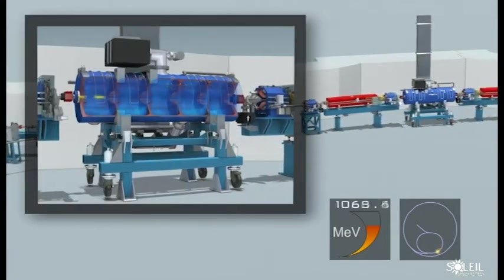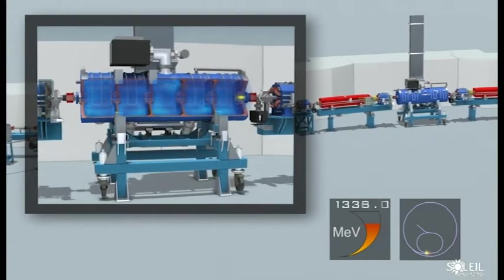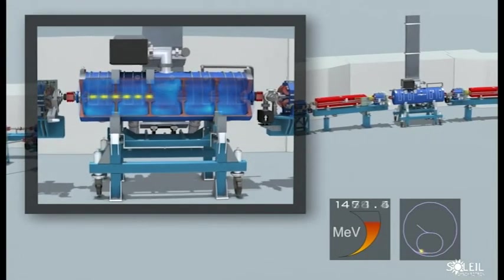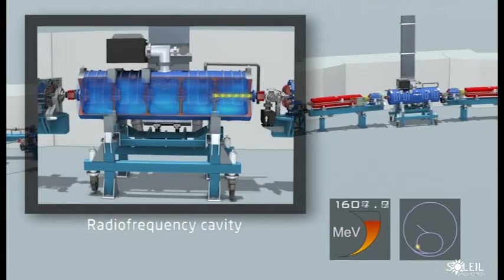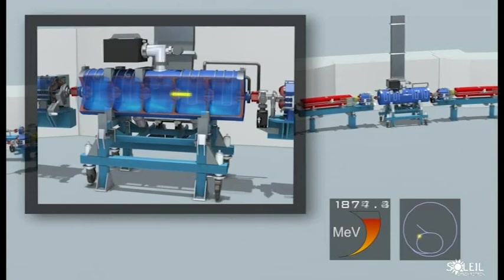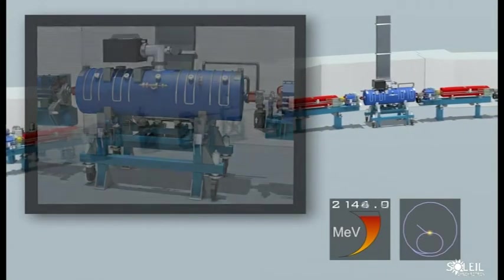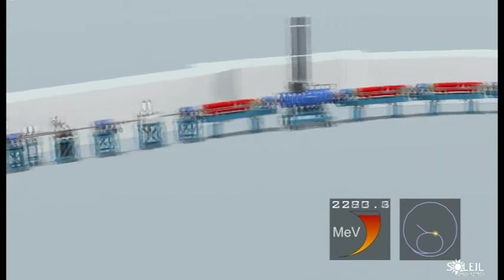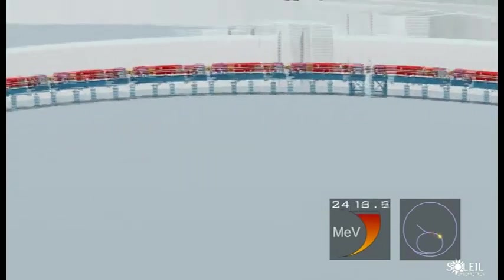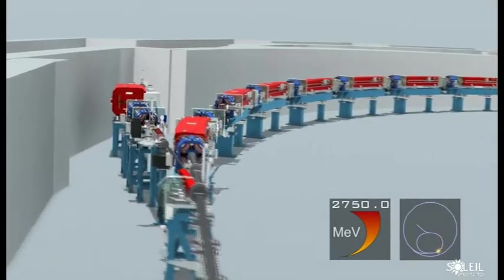The electrons make a complete circuit round the booster with the help of these 36 bending magnets. During each circuit, they cross an accelerator cavity that regroups and increases their energy a little. In less than two-tenths of a second, they make 300,000 circuits and at that point reach the operating energy chosen by Soleil, 2.75 billion electron volts.